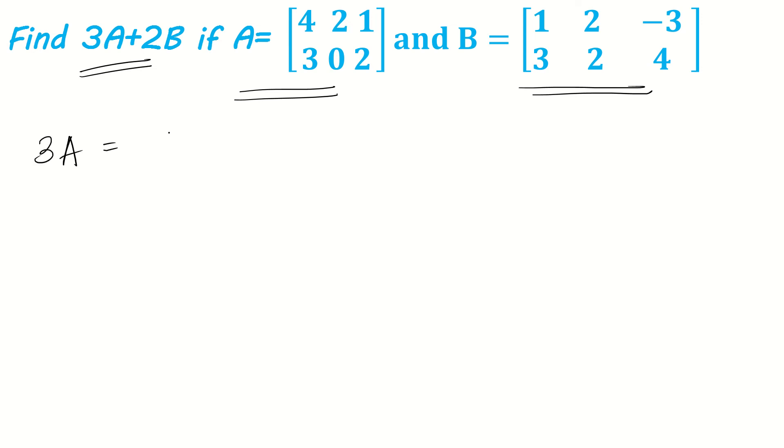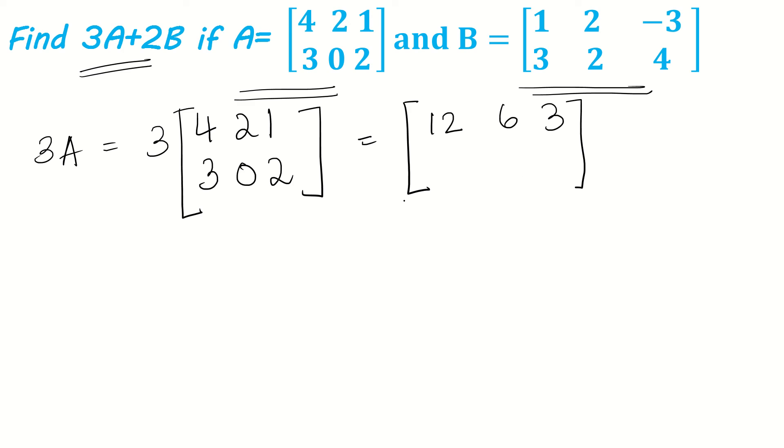3A means each element of matrix A must be multiplied by 3. This is 3 into 4, 2, 1, 3, 0, 2. Multiply each element of A with 3. 3 times 4 is 12, 3 times 2 is 6, 3 times 1 is 3. Sorry, 3 times 3 is 9, 3 times 0 is 0, 3 times 2 is 6. So 3A we found.